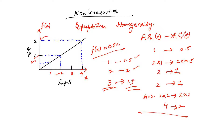However, if the input-output relationship were a curved (non-linear) graph, you can observe from the curve alone that it does not follow the properties of superposition or homogeneity.